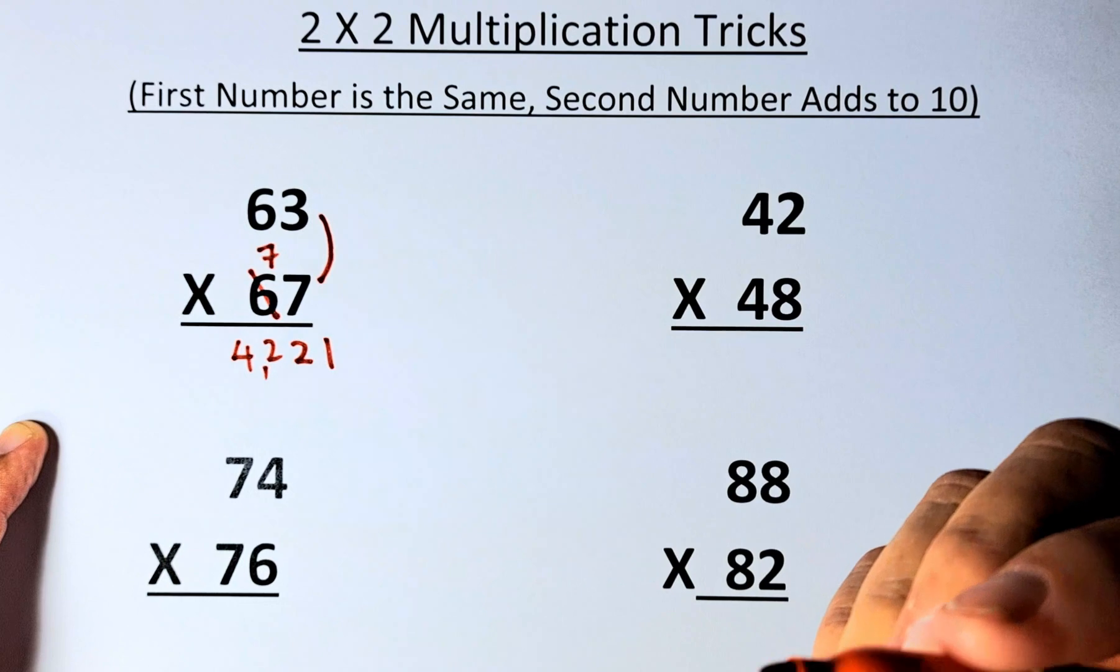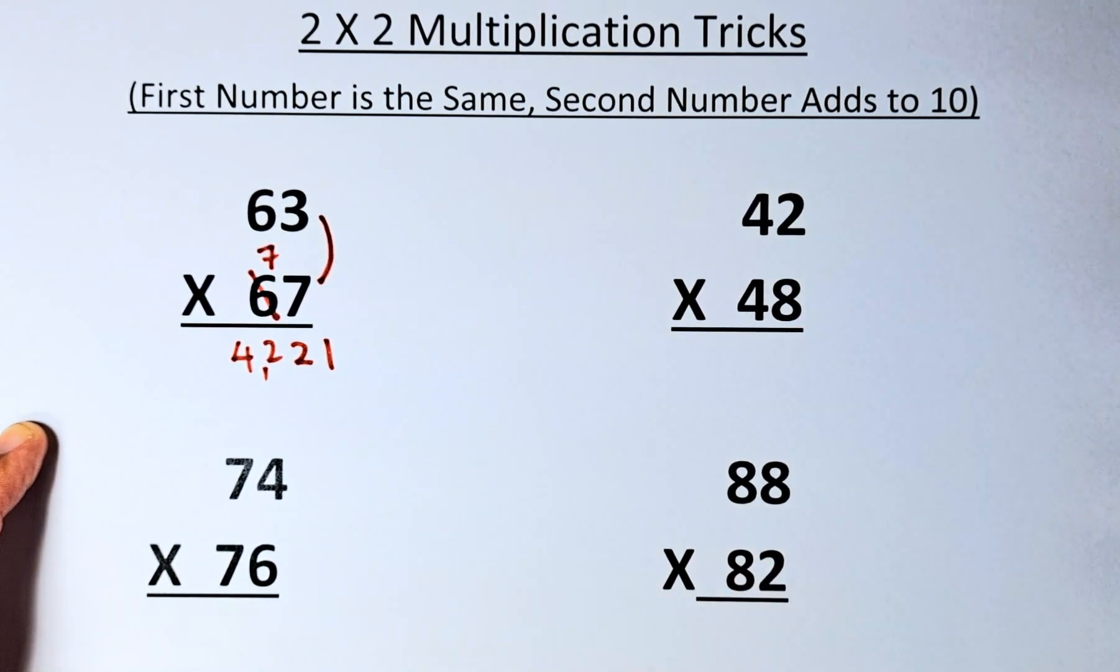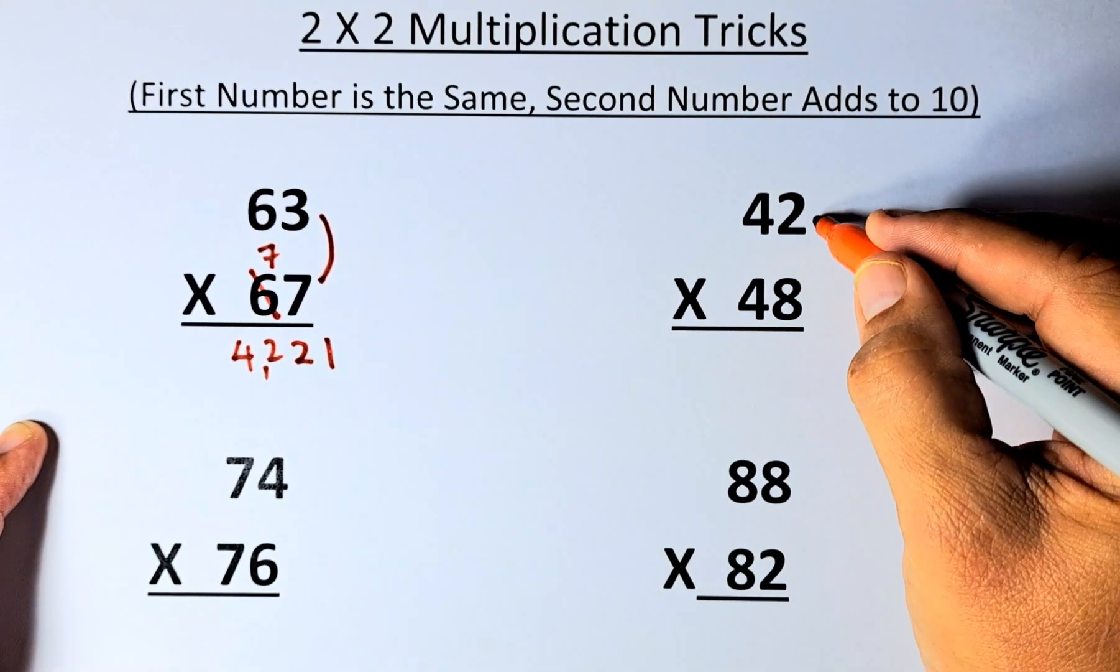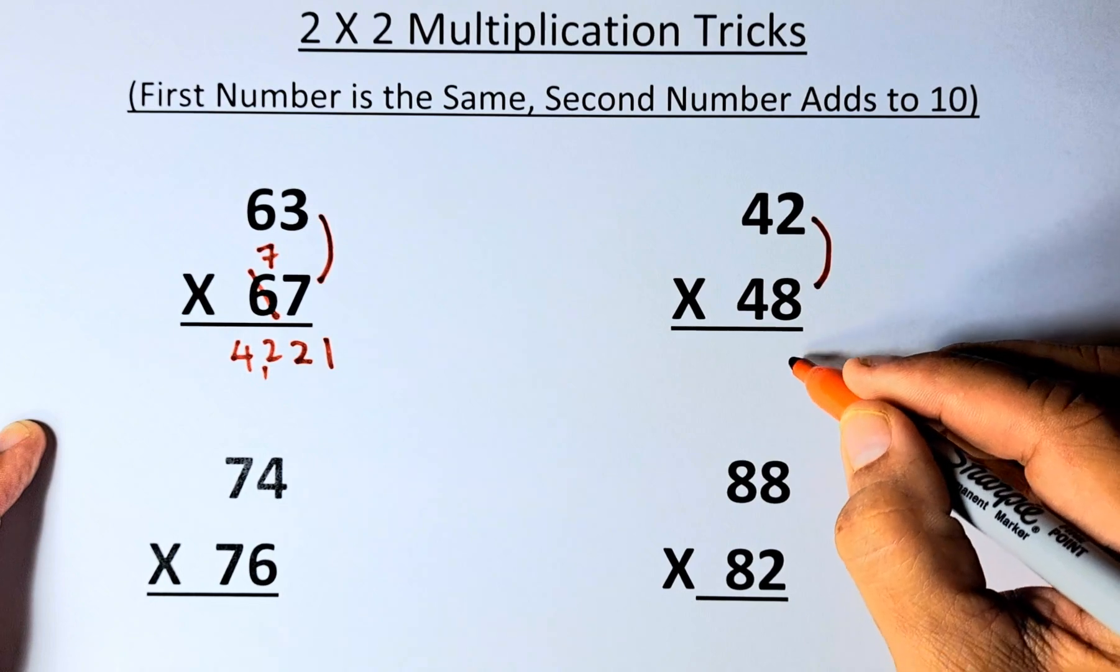63 x 67 is 4,221. Let's do the second example, 42 x 48. So again, 2 x 8 is going to be 16,